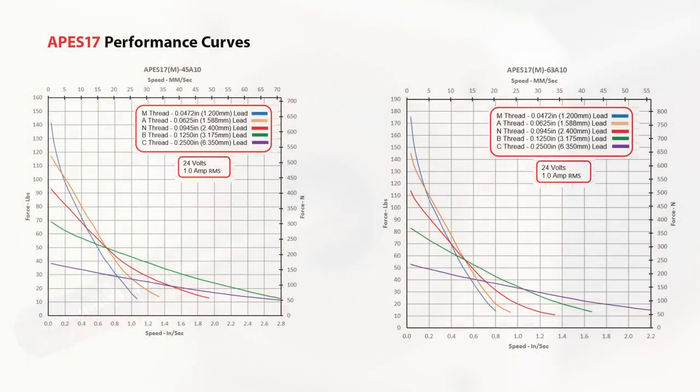This speed force curve shows the maximum force for various configurations of lead screw threads. This example shows the NEMA 17 frame APES 17 with M threads, which is the blue line, capable of producing a maximum force of over 1,000 Newtons or 225 pounds.